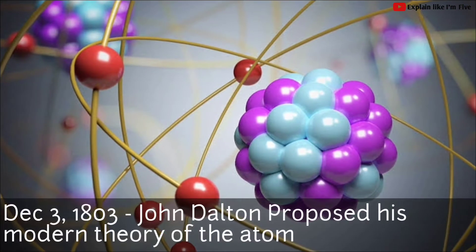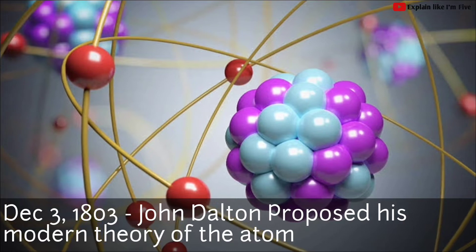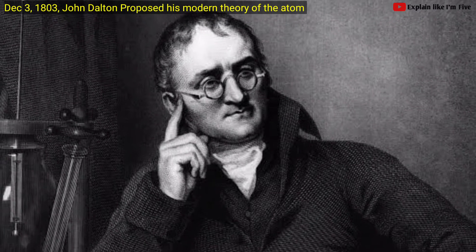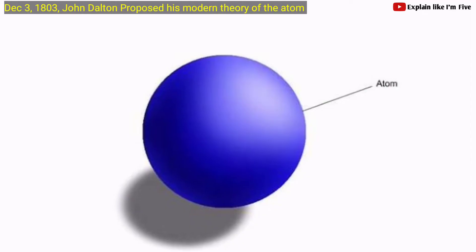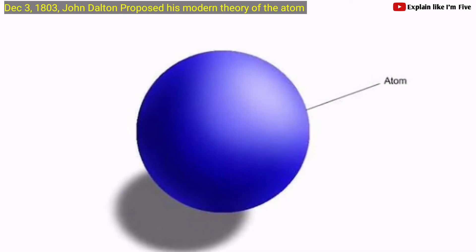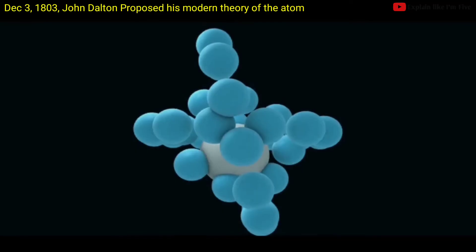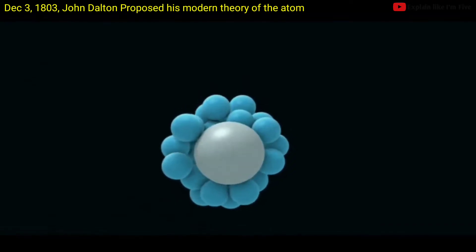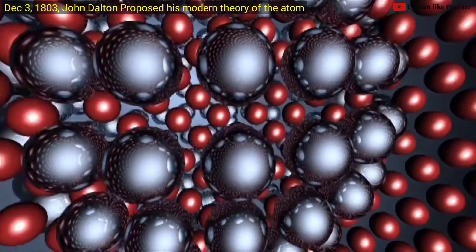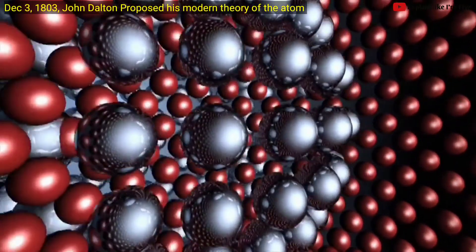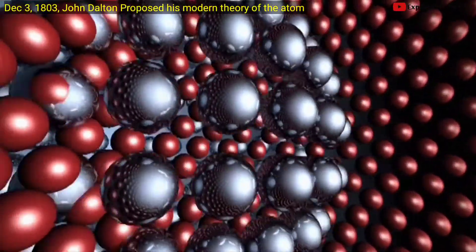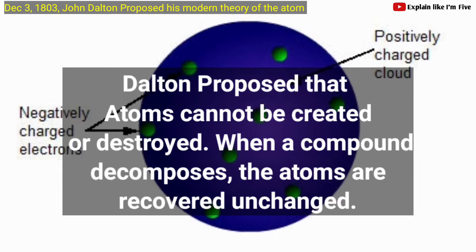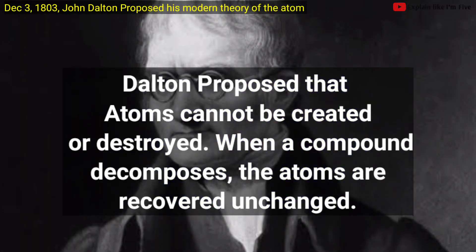Later on, on December 3, 1803, John Dalton proposed his modern theory of the atom, based upon five factors: matter is made up of atoms that are indivisible and indestructible; all atoms of an element are identical; atoms of different elements have different weights and chemical properties; atoms of different elements combine in simple whole numbers to form compounds; and atoms cannot be created or destroyed — when a compound decomposes, the atoms are recovered unchanged.